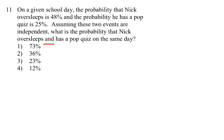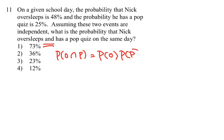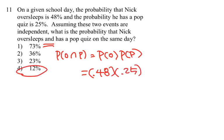Number eleven: the probability of oversleeping is 0.48 and the probability of having a pop quiz is 25%, which is 0.25. We're looking for the probability that someone both oversleeps and has a pop quiz. Since the events are independent, all we have to do is multiply the probabilities: 0.48 multiplied by 0.25 gives us 12%.